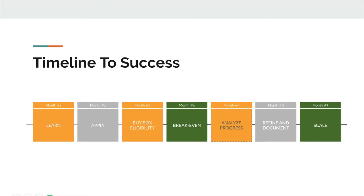Before we get started, I've outlined this timeline to success. Month one is learning everything you possibly can about the business, which we'll help you with in this training and the coming trainings. Month two is applying everything you've learned. Month three is when you'll become buy box eligible, so you'll start seeing more orders coming through and increased profit. Month four is when we expect you to break even.